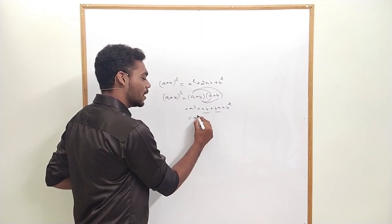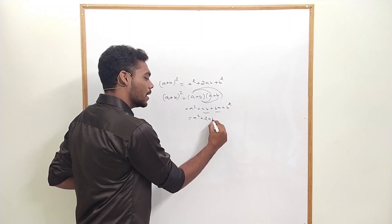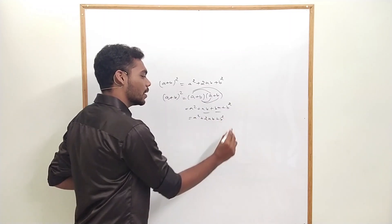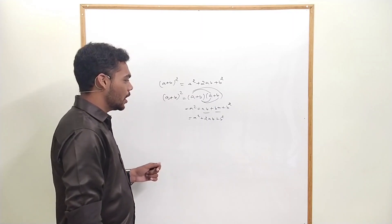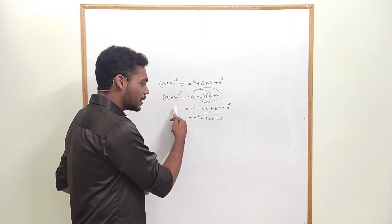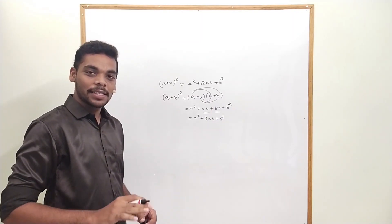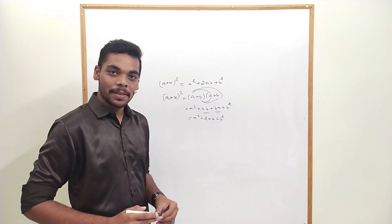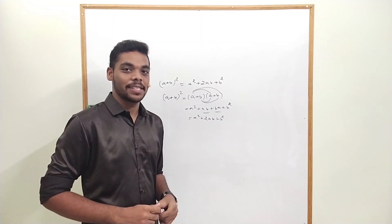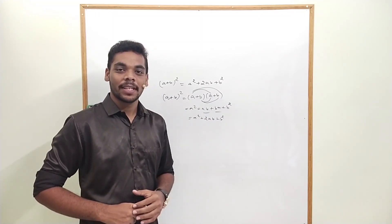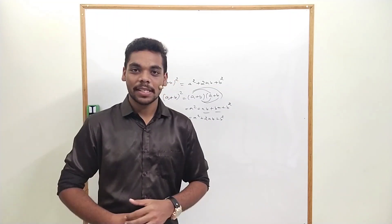Since AB and BA are the same, we write A square plus 2AB plus B square. That's it — math is simple. Math is not a tough subject. It's an easy subject. Very, very easy subject. This is mathematics.